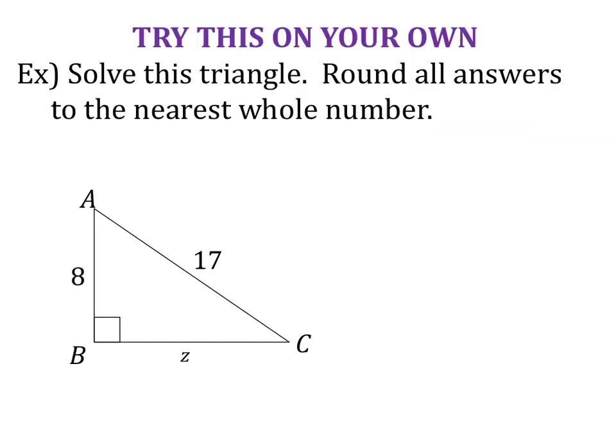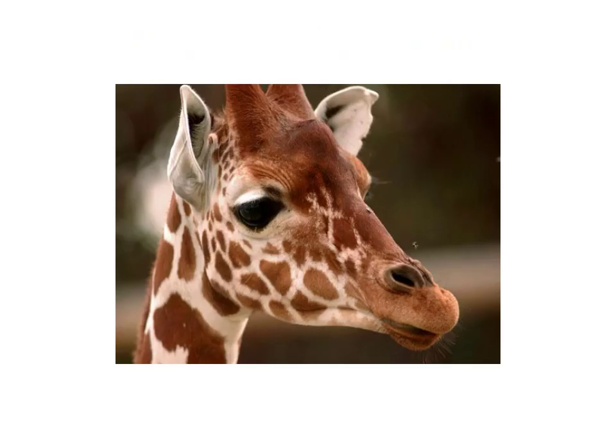This is the third problem I'm leaving for you to try on your own tonight. The first problem was all by yourself; the second I completed partially. This one is a full solve-the-right-triangle on your own — I'm expecting three answers: the side length of Z, angle A, and angle C. Have those completed before class so we can check them together. That's everything for this evening — see you in class.